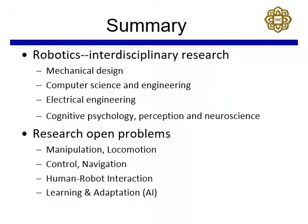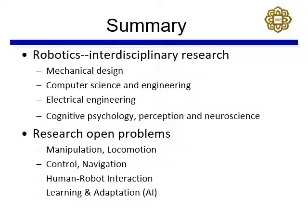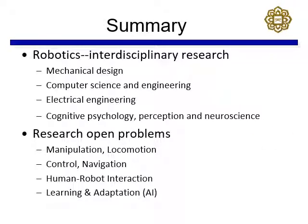In summary, robotics is an interdisciplinary research field involving mechanical design, computer science and engineering, electrical engineering, cognitive psychology, perception, and neuroscience. When we talk about artificial intelligence in robotics, research areas include manipulation, locomotion, control, navigation, human-robot interaction, and how AI can help robotic systems.